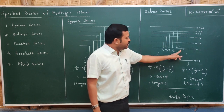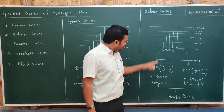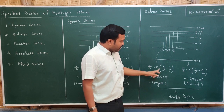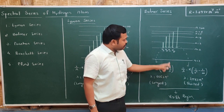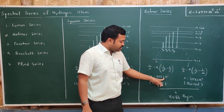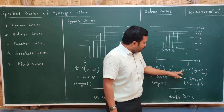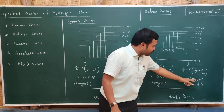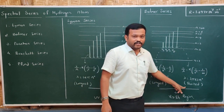The last member of the Balmer series is from infinity to n=2. The wavelength of the first member: 1/λ = R(1/2² − 1/3²), giving λ = 6,563 Å. For the last member: 1/λ = R(1/2² − 1/∞), giving λ = 3,646 Å. Comparing these two, 6,563 Å is the longest wavelength and 3,646 Å is the shortest. Shorter the transition, longer the wavelength; longer the transition, shorter the wavelength.